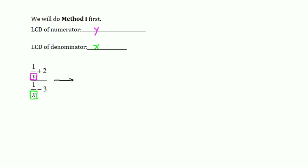Because we are going to work on each part individually, I'll draw a large dividing line to separate them. I take my 1 over Y and leave that expression alone because it already has the LCD as its denominator. My second term is 2, which I will write as 2 over 1. This is the term I'm going to modify because I want it to have the LCD — which in the numerator is Y — as its denominator. So I will multiply this expression by Y over Y.